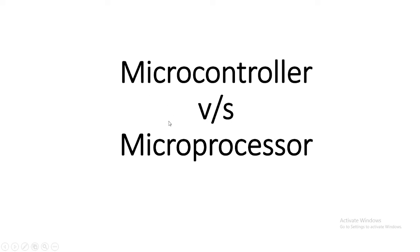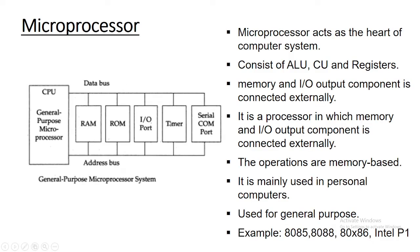In this video we will be discussing the difference between microprocessor and microcontroller. A microprocessor is a device which processes information. The word microprocessor is a combination of two words: micro and processor. Micro refers to being fabricated on microchips like micro silicon chips, and processor refers to something which processes information or data.